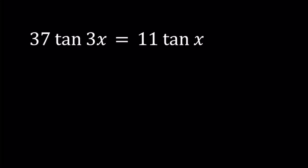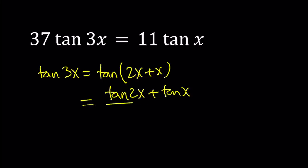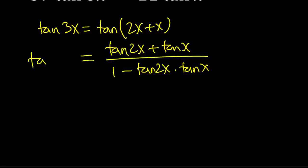Let's go ahead and start with our first method. First method basically involves using the formula for tangent 3x. Tangent 3x can be written as tangent 2x plus x. And from the sum formula this is tangent 2x plus tangent x divided by 1 minus tangent 2x times tangent x. And tangent 2x has a formula too. Tangent 2x can be written as 2 times tangent x divided by 1 minus tangent squared x.